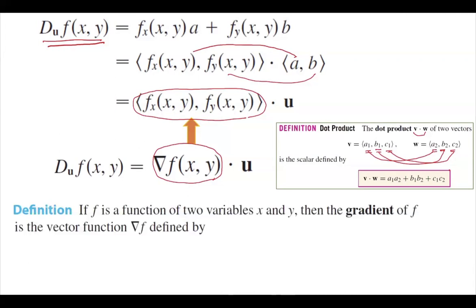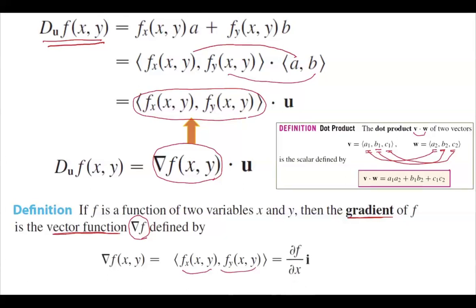If f is a function of two variables x and y, then the gradient of f is a vector function. The gradient of f equals the partial derivative of f with respect to x in the direction of the unit vector i, plus the partial derivative of f with respect to y in the direction of the unit vector j. Any vector with components a and b can be written as ai + bj, or in vector component format (a, b).